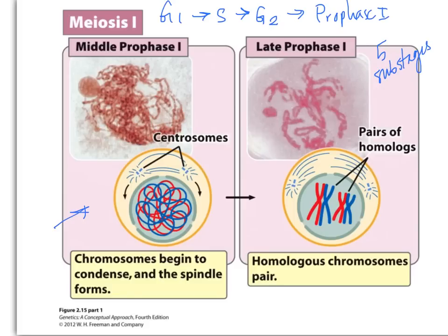The important events that occur are the pairing of homologous chromosomes. This occurs in a process called synapsis — synapsis is the pairing of the homologous chromosomes, and you can see they've lined up together.